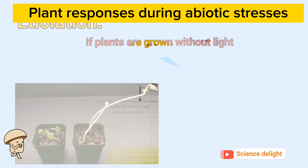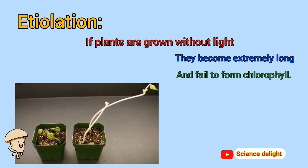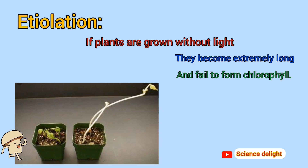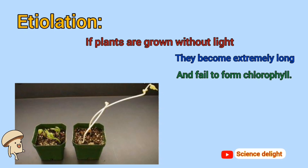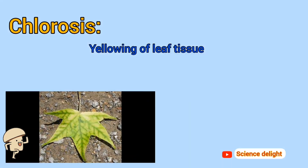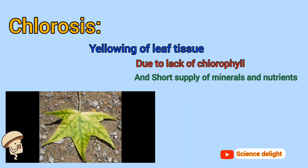These two conditions are very common in plants. First one is etiolation — if plants are grown without light, they become extremely long and fail to form chlorophyll. Second one is chlorosis, which means yellowing of leaf tissue due to lack of chlorophyll.